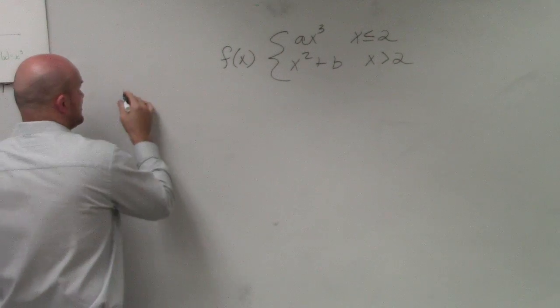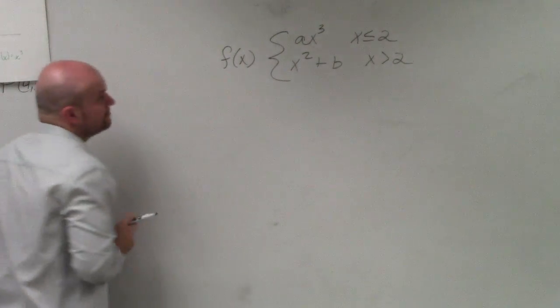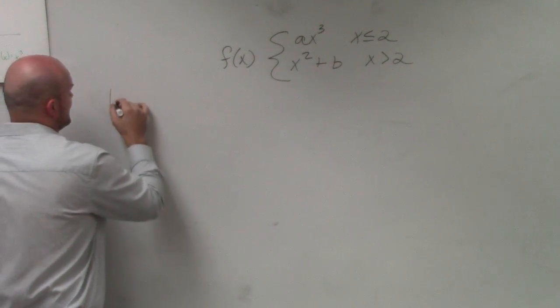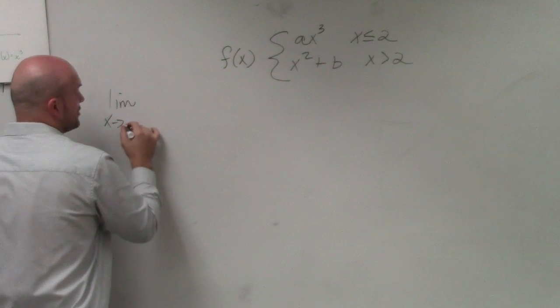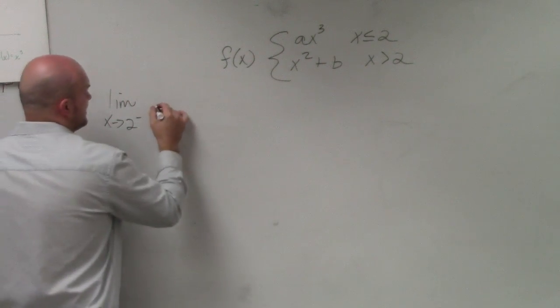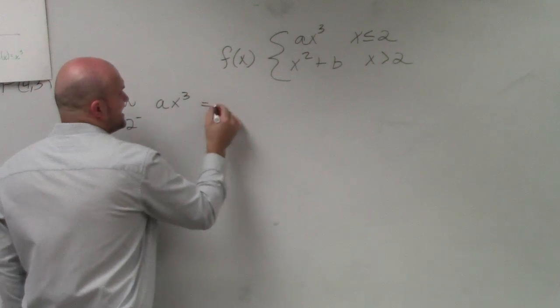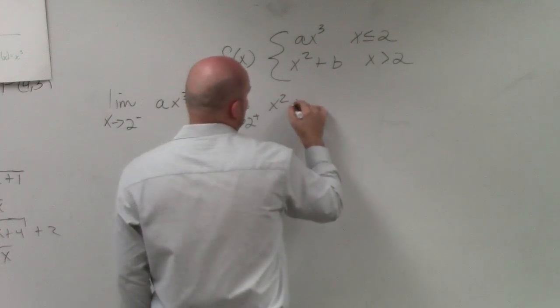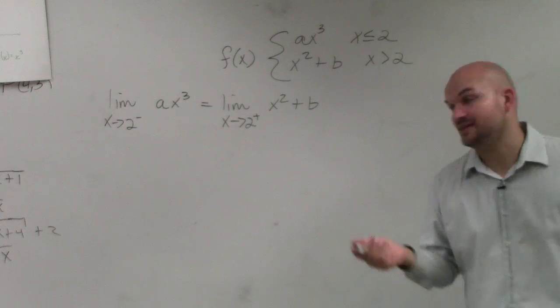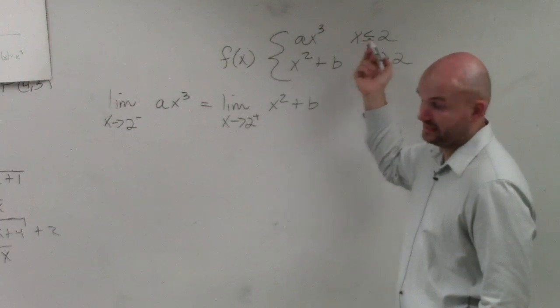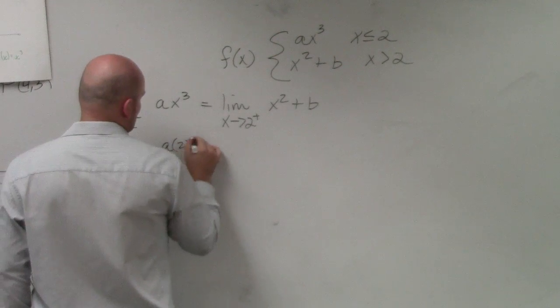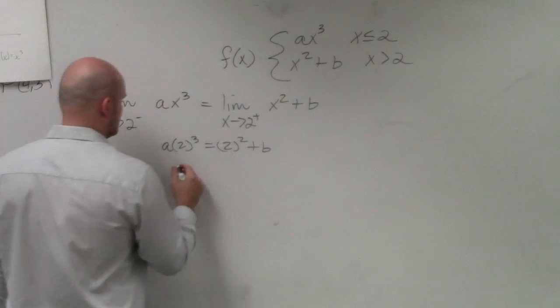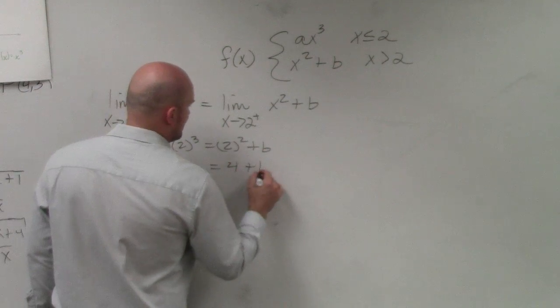So what we're going to first do is you can see that our discontinuity here is at 2 and 2. So therefore, let's check continuity. So I'm going to say the limit as x approaches 2 from the left is equal to ax cubed, has to equal the limit as x approaches 2 from the right of x squared plus b. But we're evaluating these when x is going to be equal to 2. So a times 2 cubed equals 2 squared plus b. And we say 8a is equal to 4 plus b.